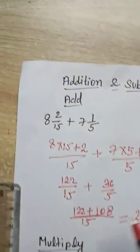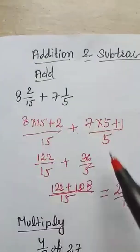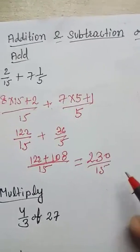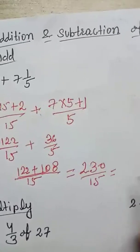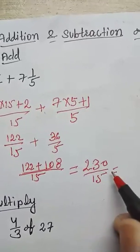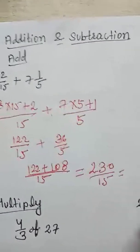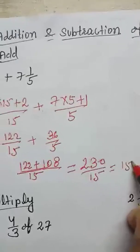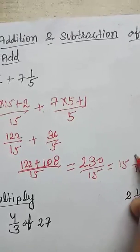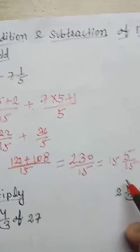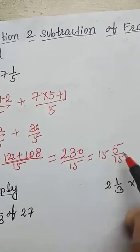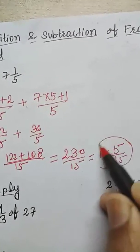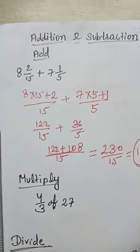The answer is not exact because the question was given as a mixed fraction, so the answer should also be a mixed fraction. Convert 230 divided by 15: 15 times 15 is 225 plus 5 remainder, so your answer is 15 and 5 upon 15.